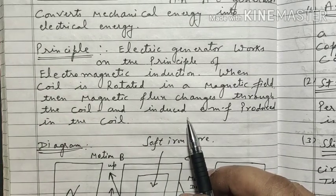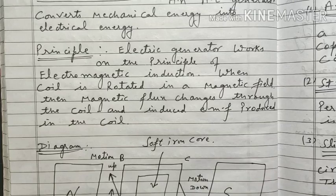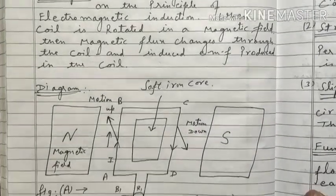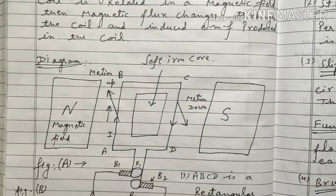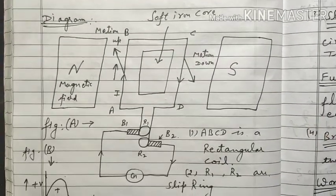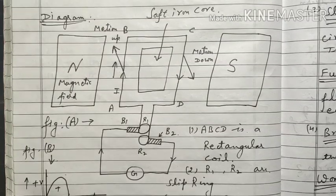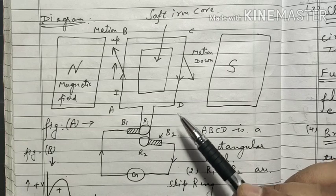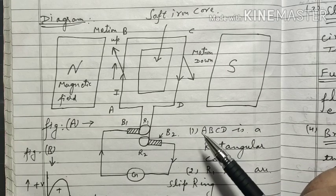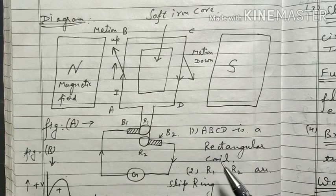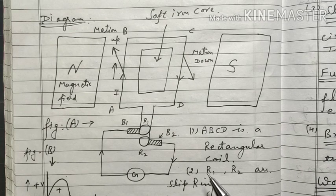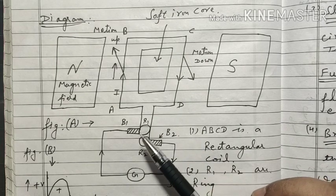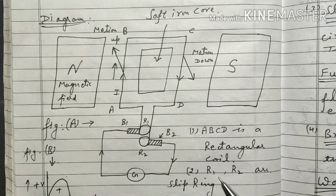This is the principle on which it is based. Now let's study it further with the help of a diagram. The diagram part is also very important. You need to understand the diagram well and draw it two to three times for practice. In exams, they often ask you to draw the diagram of the electric generator and label its components.